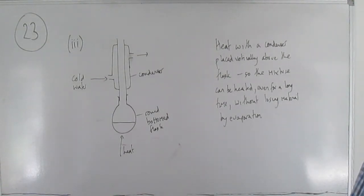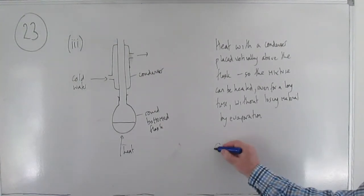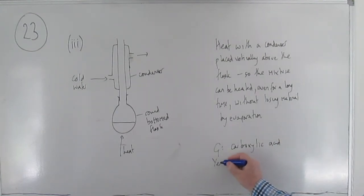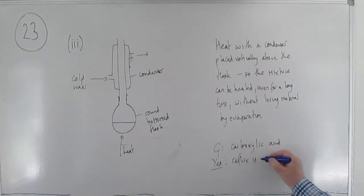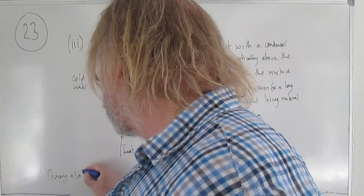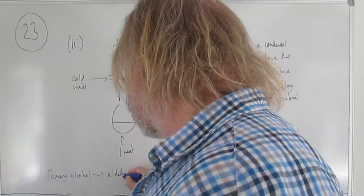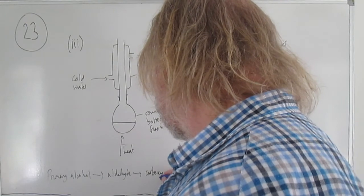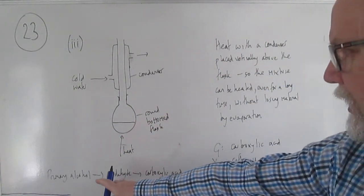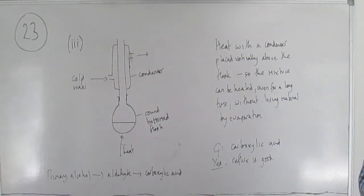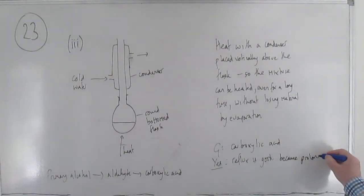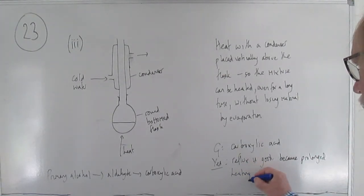It asks whether reflux is what you'd do to make compound G, which is the carboxylic acid. The answer is yes. To get to compound G, you go from primary alcohol to aldehyde first, and then — this second step is slower — to carboxylic acid. So you have to heat for quite a long time, and if you didn't reflux, all your material would just escape into the air. So yes, reflux is good because prolonged heating is needed to get the carboxylic acid.